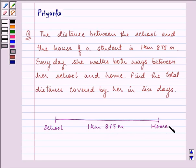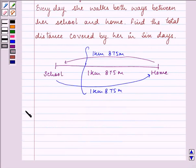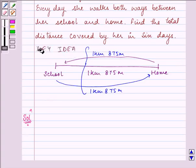Now she walks to and fro every day to the school. That means from home she walks down to school, and then from school again she walks back to home in one day. So that means in totality she walks 1 kilometer 875 meters twice every day. So let us start with our solution, and this analyzing was the key idea to our question.